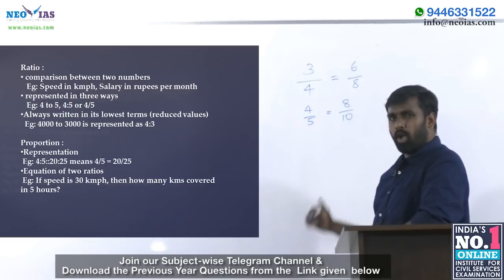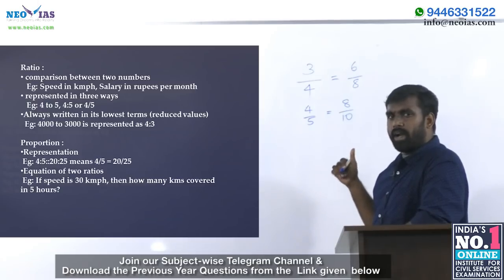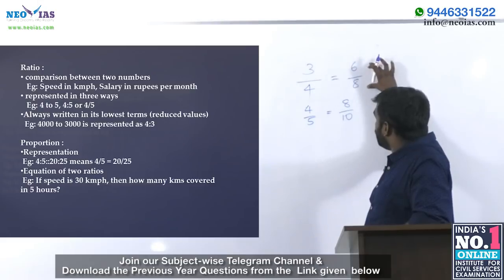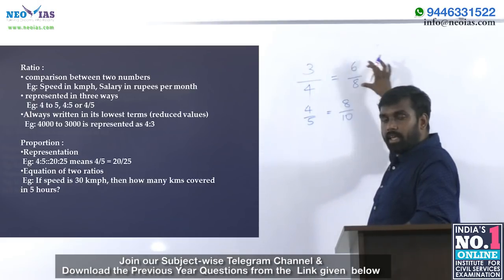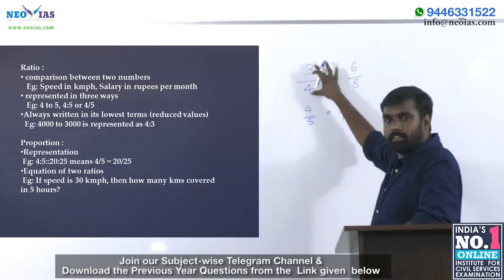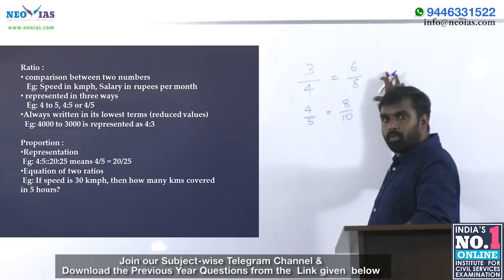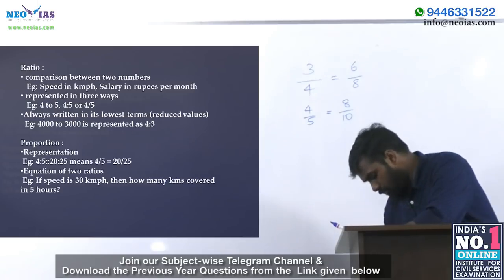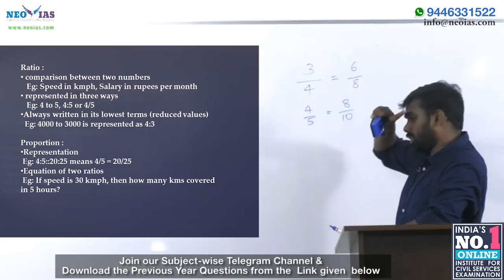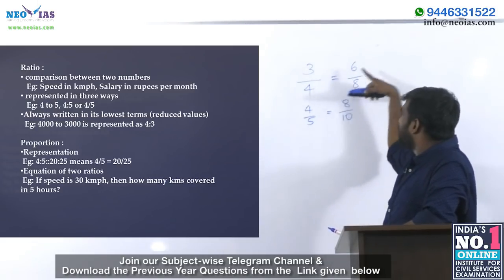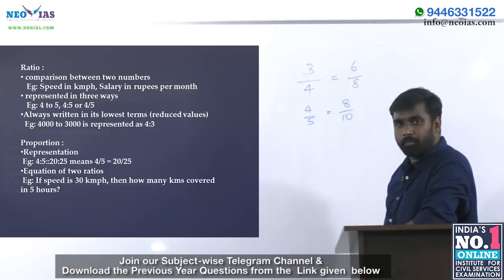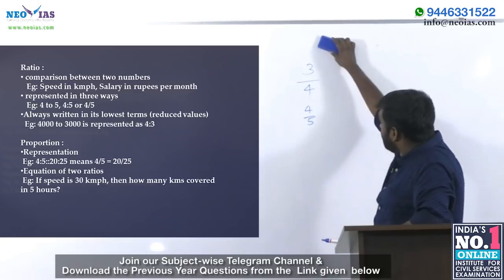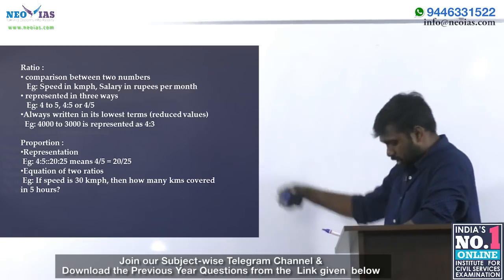These are examples of proportion. Proportion means two ratios are equated or connected together. You may wonder why we write 6 is to 8 equal to 3 is to 4 when it's already 3 is to 4. The purpose is best explained by a practical example in the question given here.